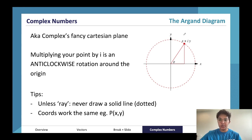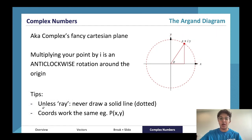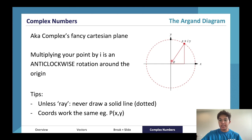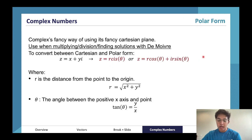That plane there is called the Argand diagram — it's just how complex numbers are represented visually. Whenever we multiply things, it's always an anti-clockwise rotation. This line here is known as a ray — we always draw rays as solid lines, everything else as a dotted line, and the coordinates still work the same way.